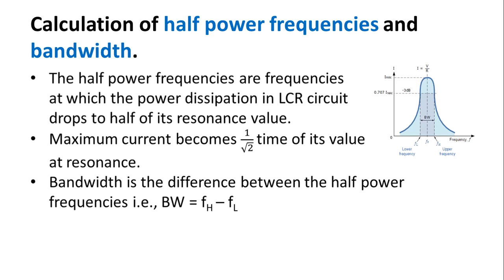Now, we shall move on to the calculation of half power frequencies and discuss the bandwidth. The half power frequencies are the frequencies at which the power dissipation in the LCR circuit drops to half of its resonance value. As shown in the diagram, a maximum current I_max is indicated, and the frequencies F_L (lower) and F_H (upper) are also shown.